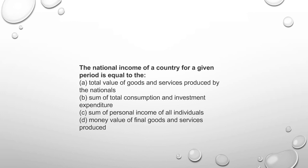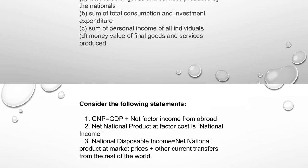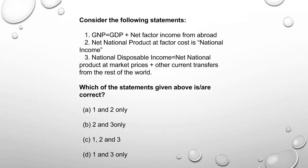The national income of a country for a given period is equal to the total value of goods and services produced by the nationals — option A. Also, GNP equals GDP plus net factor income from abroad — Gross National Product equals Gross Domestic Product plus net factor income from abroad — correct.